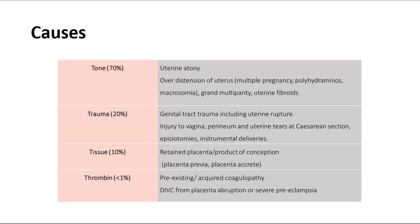These are the causes of primary postpartum hemorrhage, where there are four main causes: Tone, Trauma, Tissue, and Thrombin.